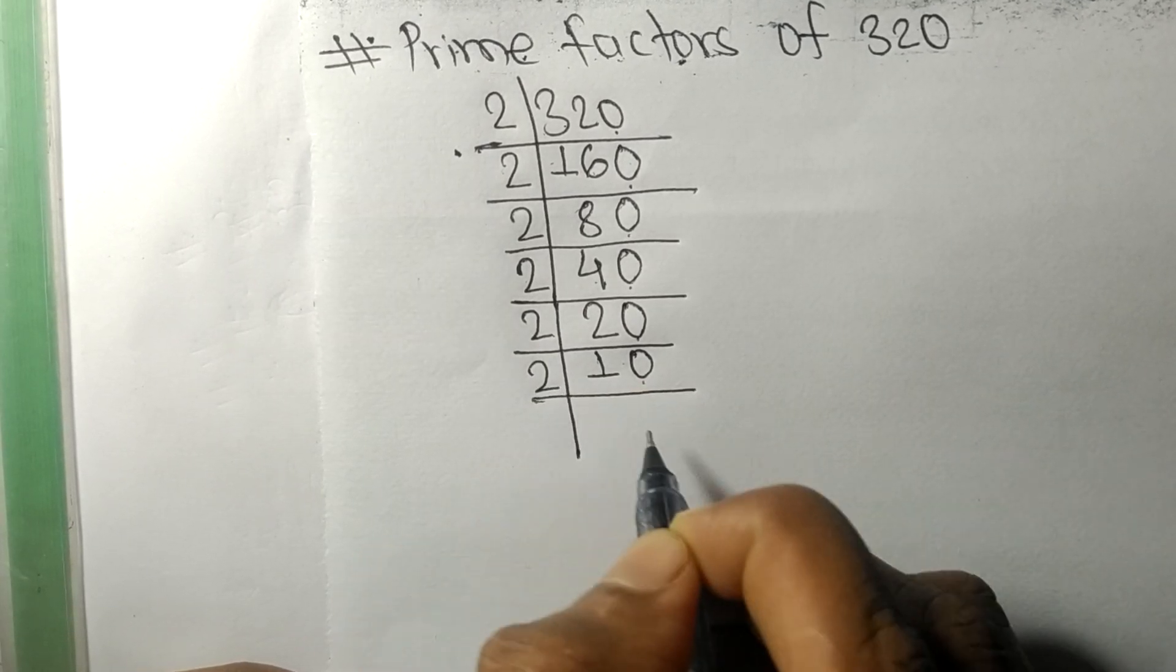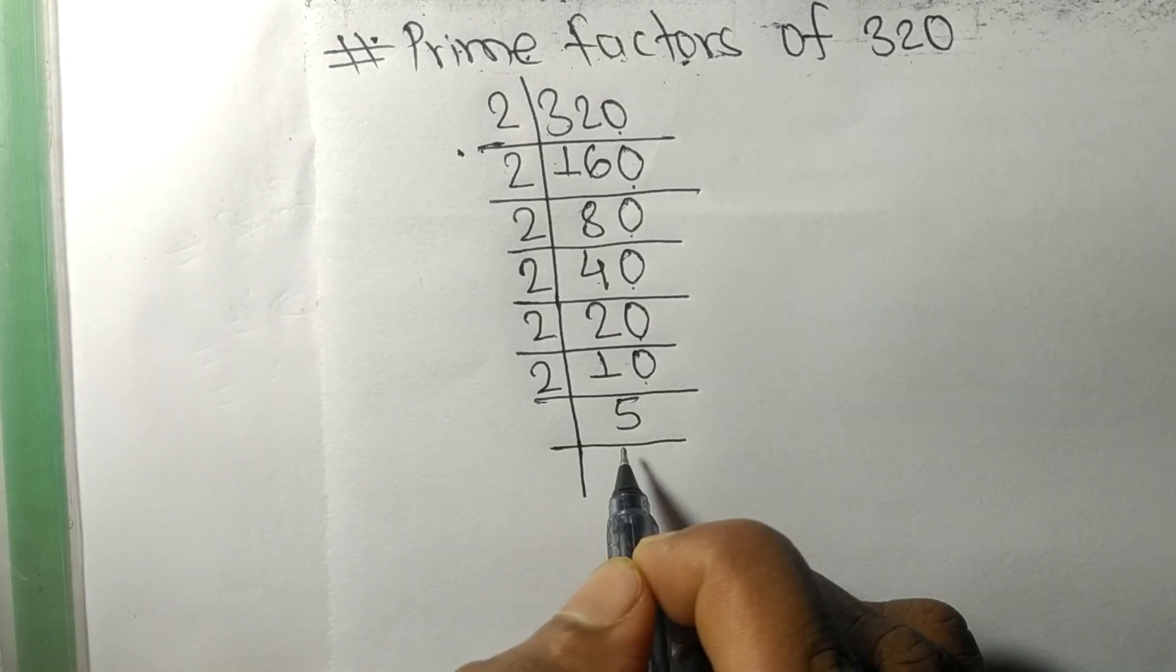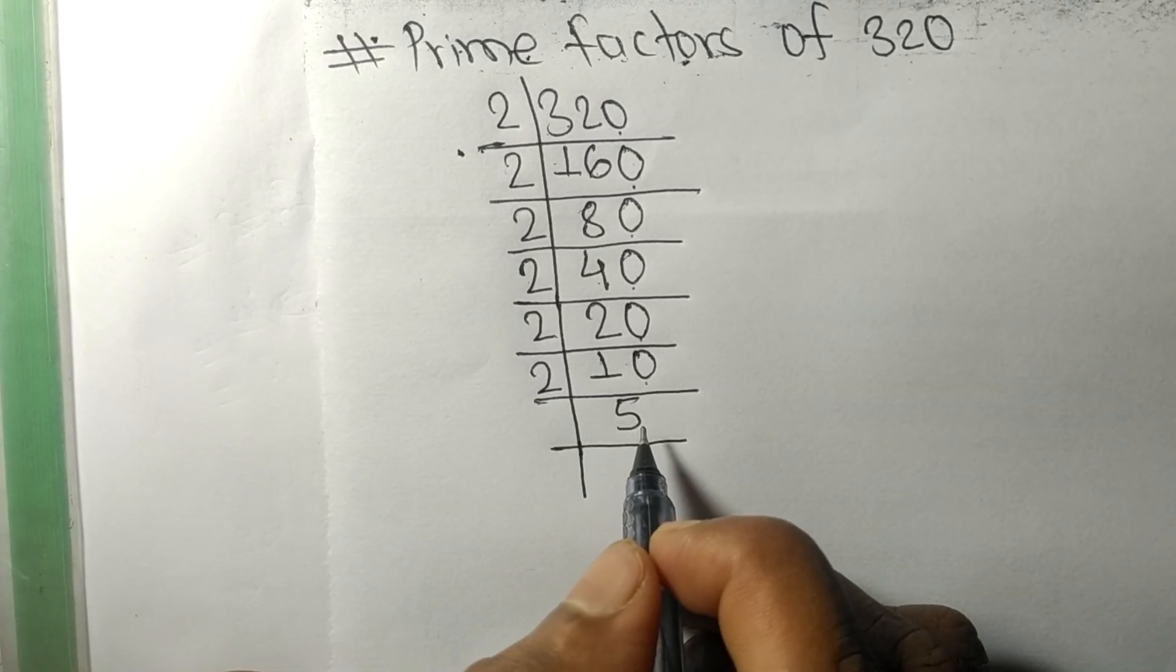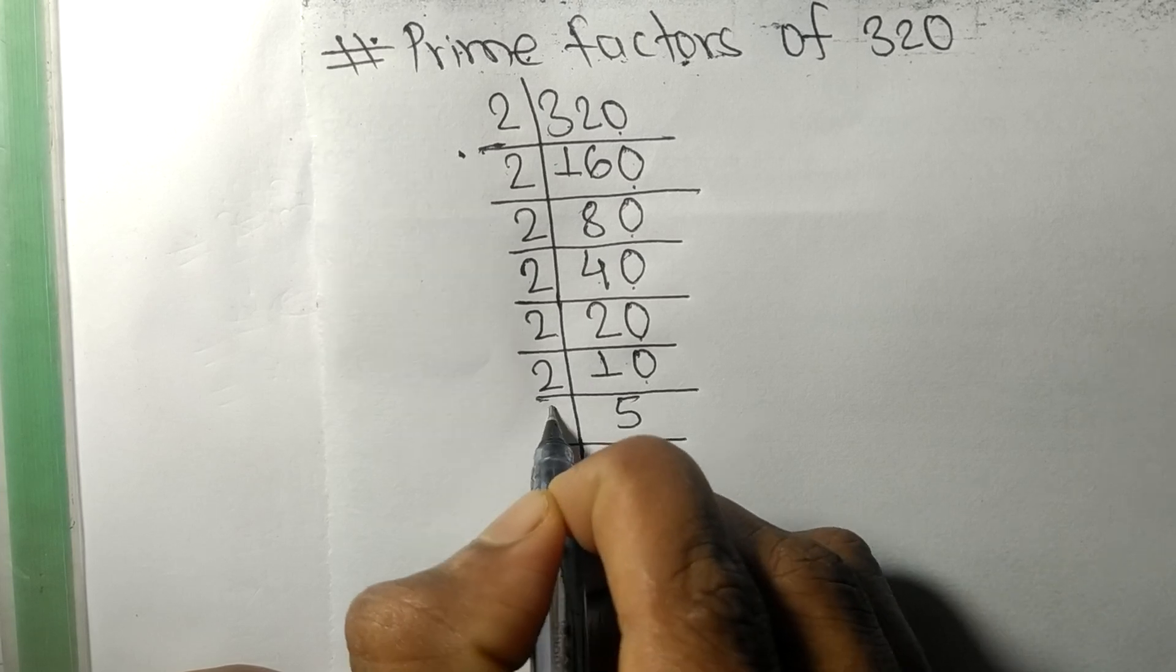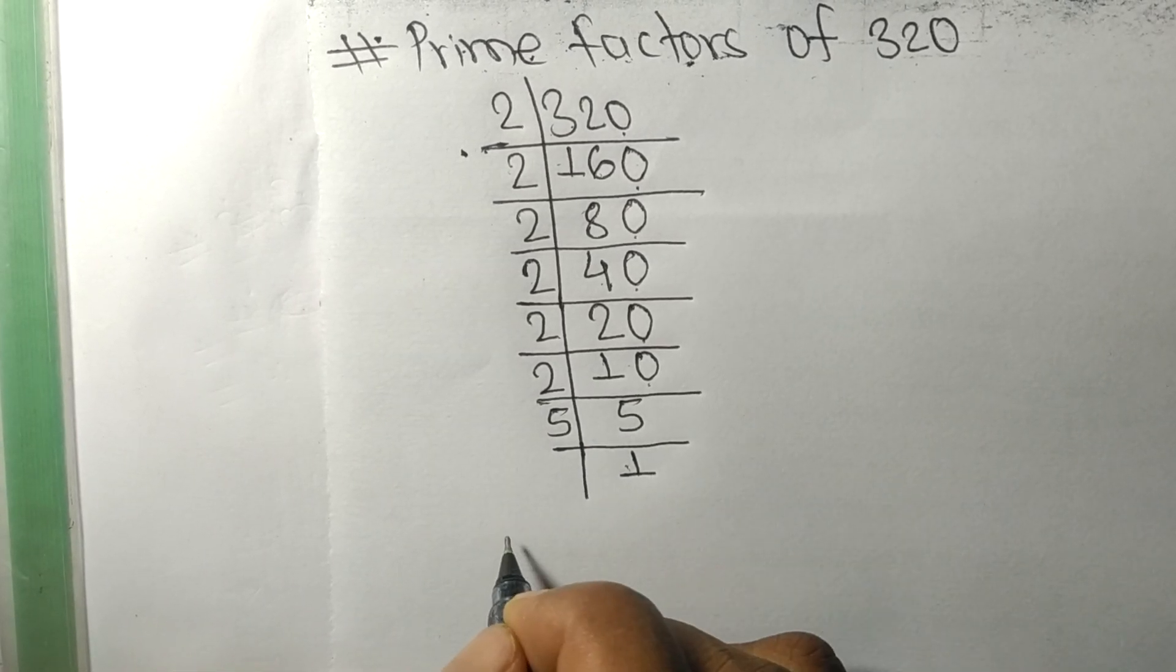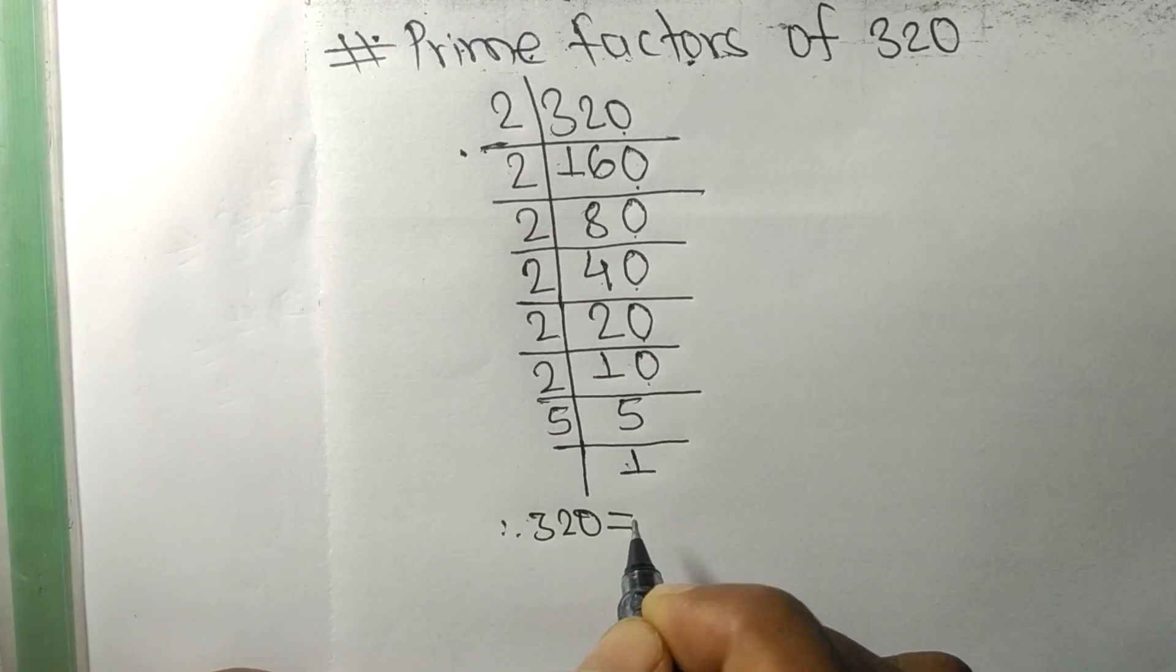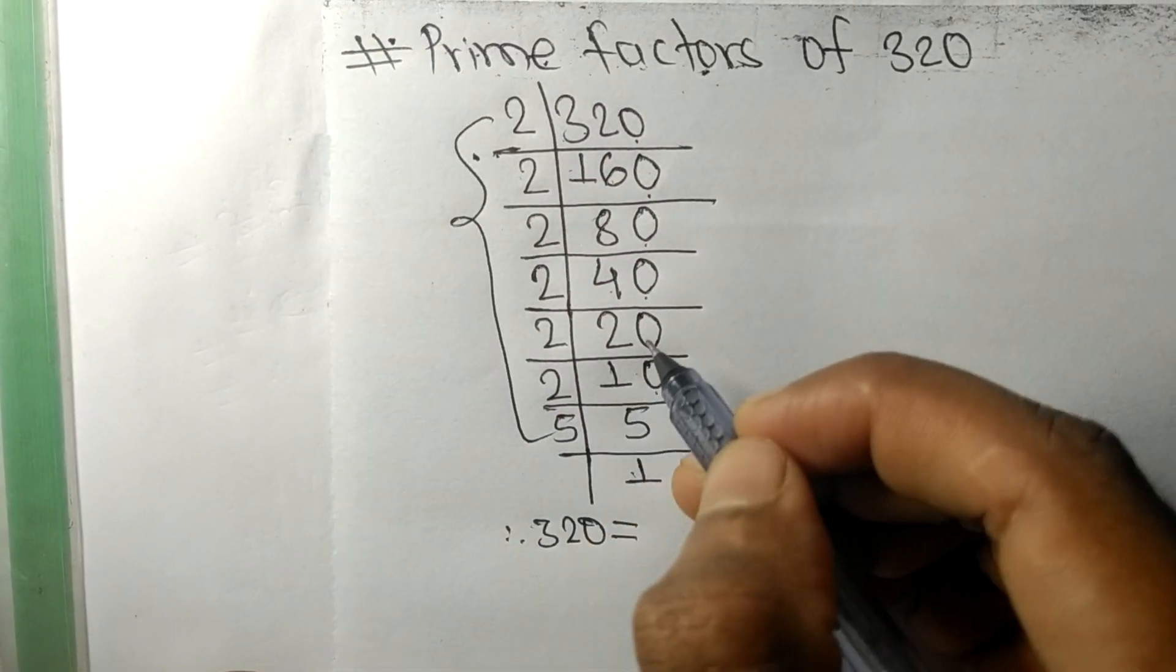And 2 times 5 is 10. So now we have 5 which is our prime number, so it is divisible by 5 itself and we get here 1.